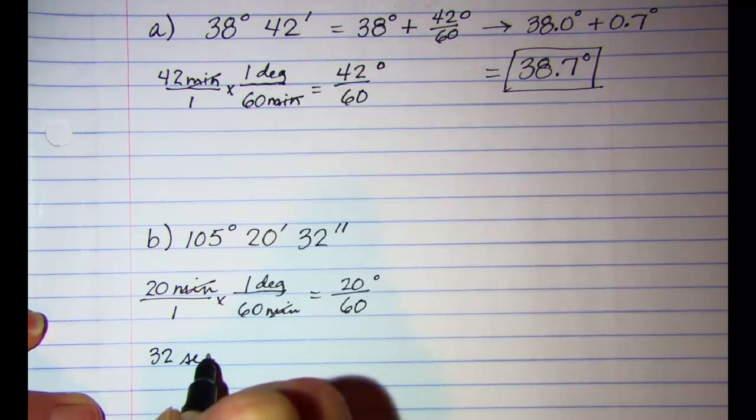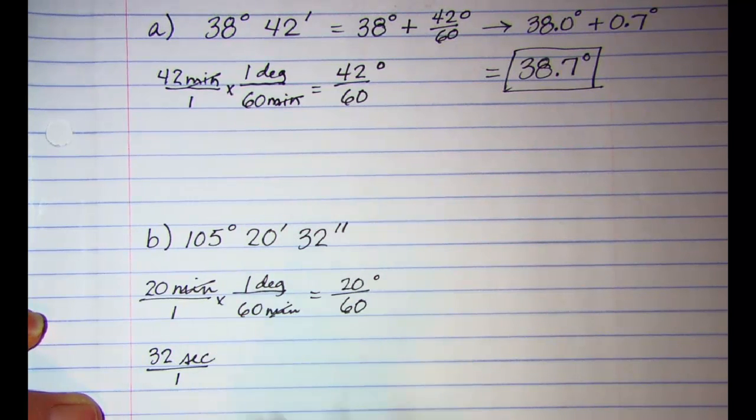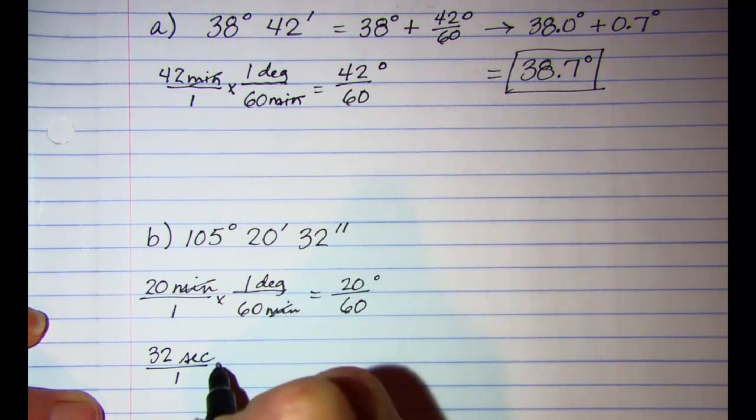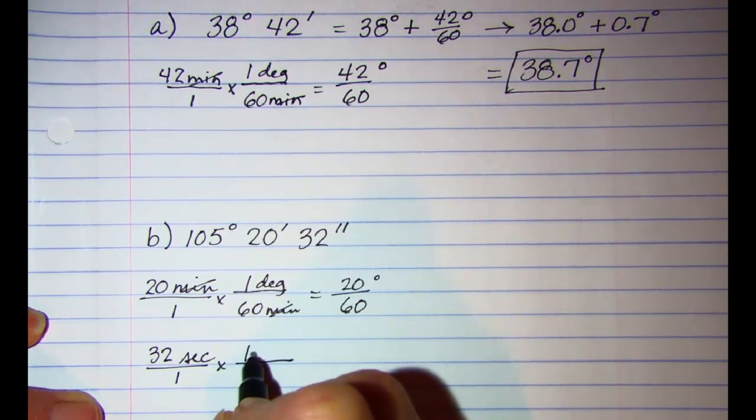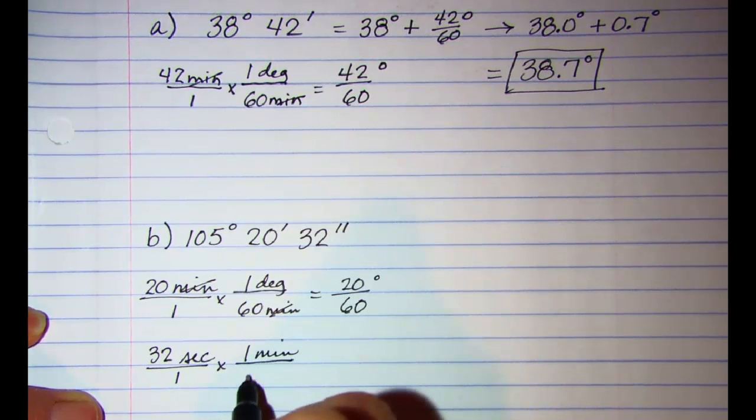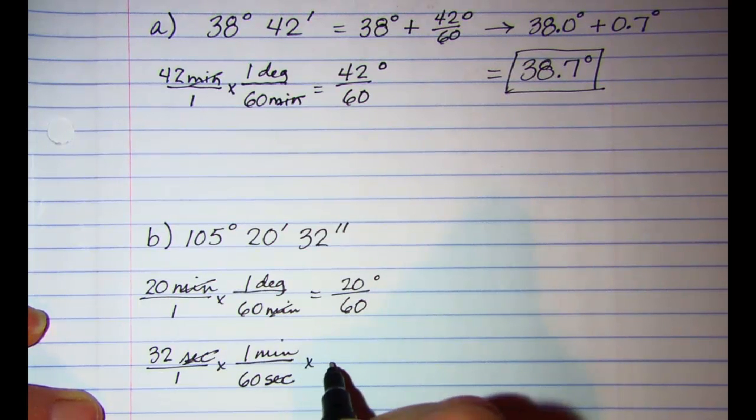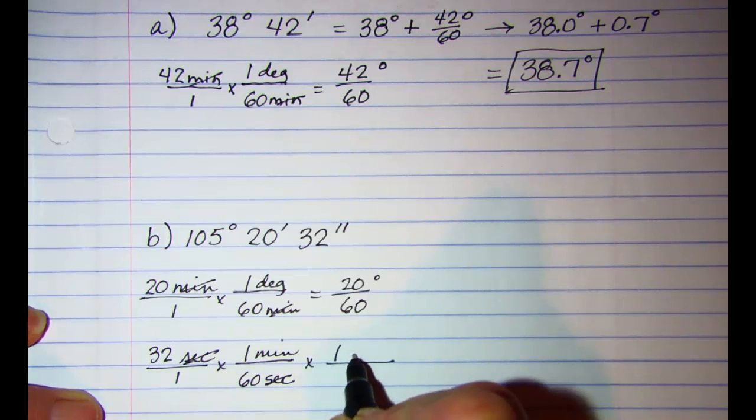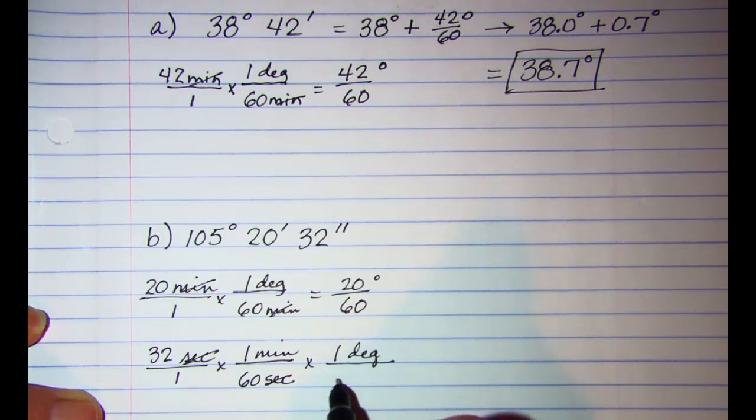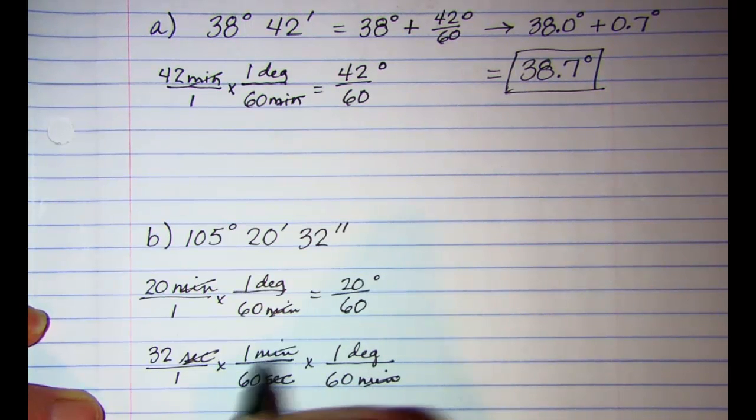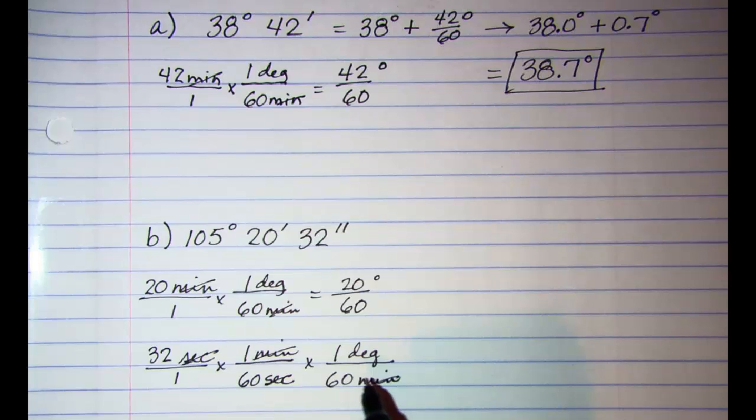And then also let's convert 32 seconds. We know that one minute is 60 seconds. And now my seconds will cancel. And then one degree is 60 minutes. And now my minutes will cancel when you have one in the numerator and one in the denominator.